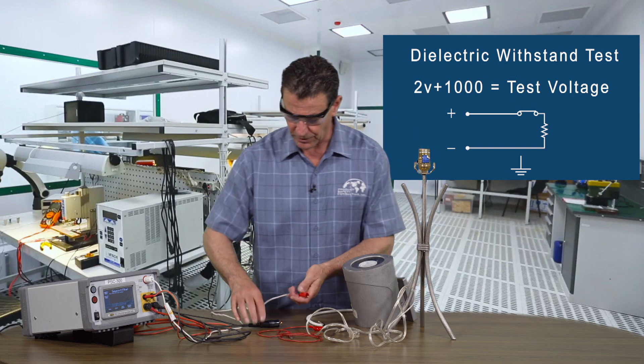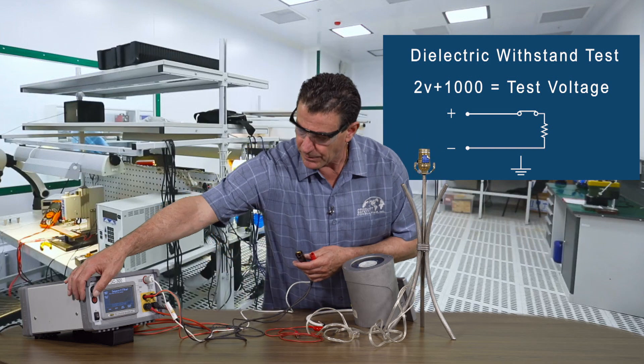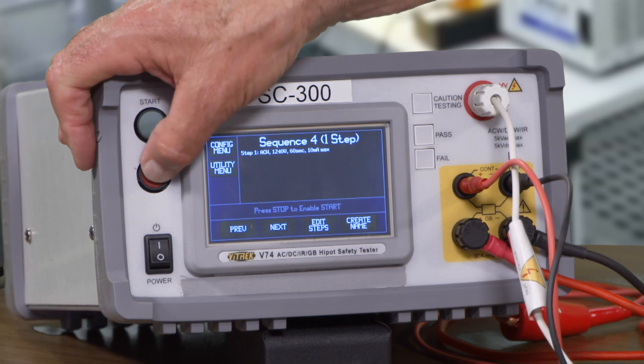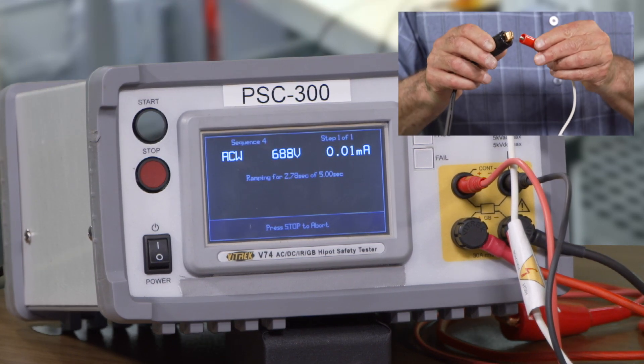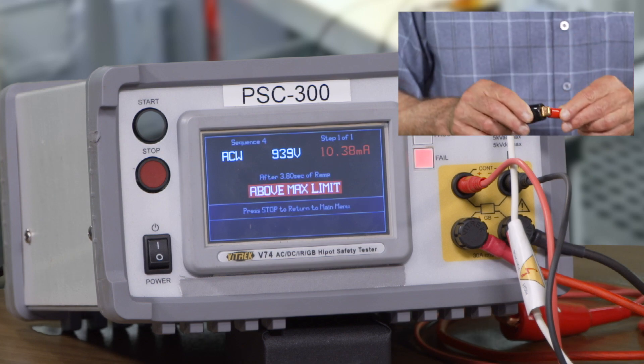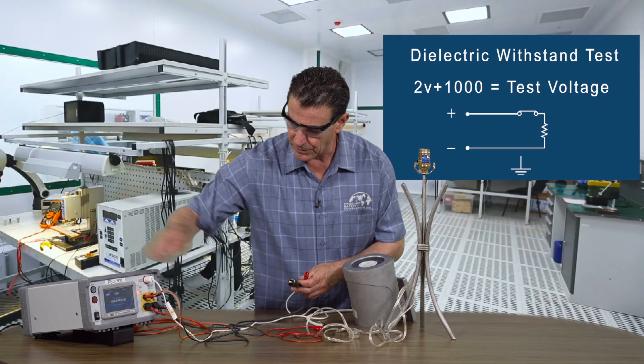So before we start we're going to make sure that our machine is actually working and we're going to short it out on purpose to see if we get a failure and we do have a failure so we're good to go.